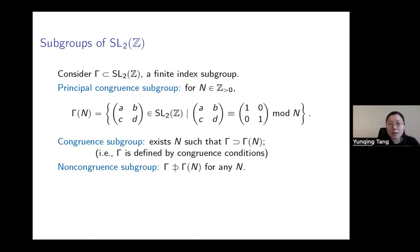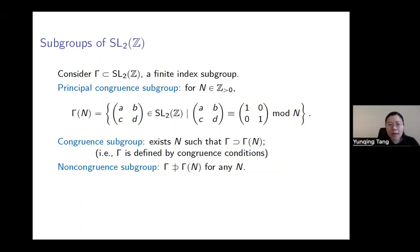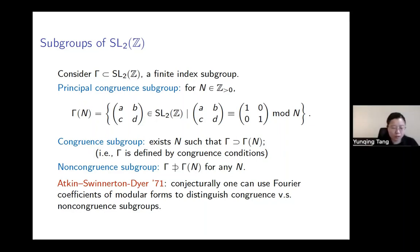The question is: could we distinguish these two types of subgroups beyond just the definition? This goes back to the work of Atkin, Swinnerton-Dyer, and Dyer, proposed at a conference in 1968. They conjectured that one could study the Fourier coefficients of modular forms with level equal to the finite index subgroup gamma and try to distinguish whether gamma is congruence or not.